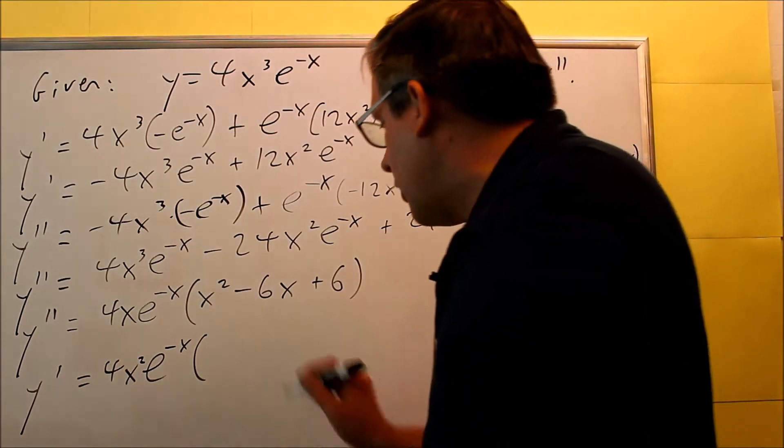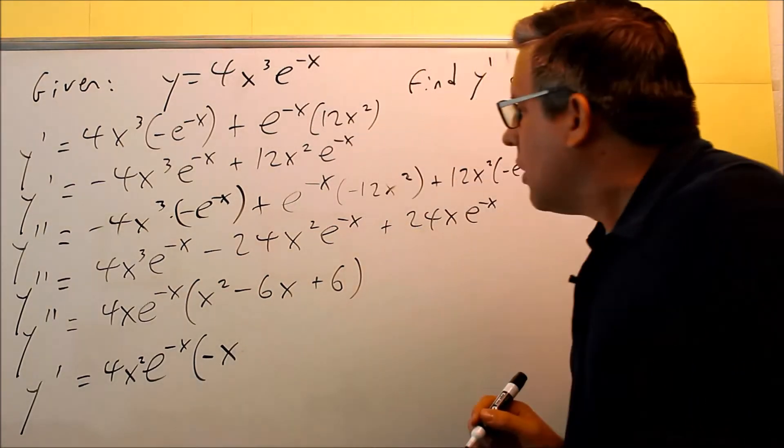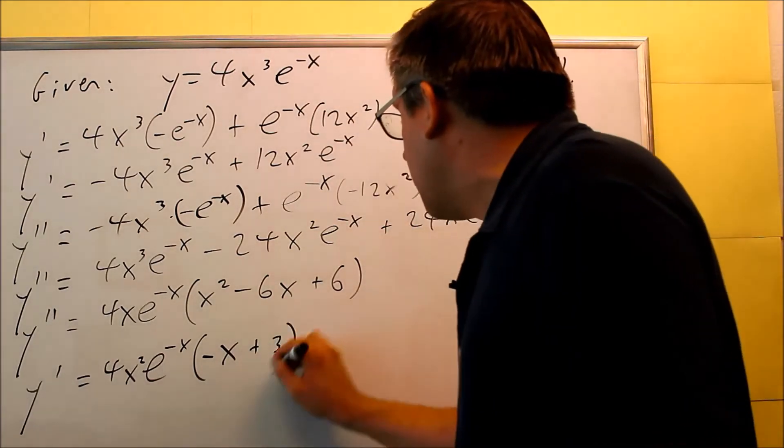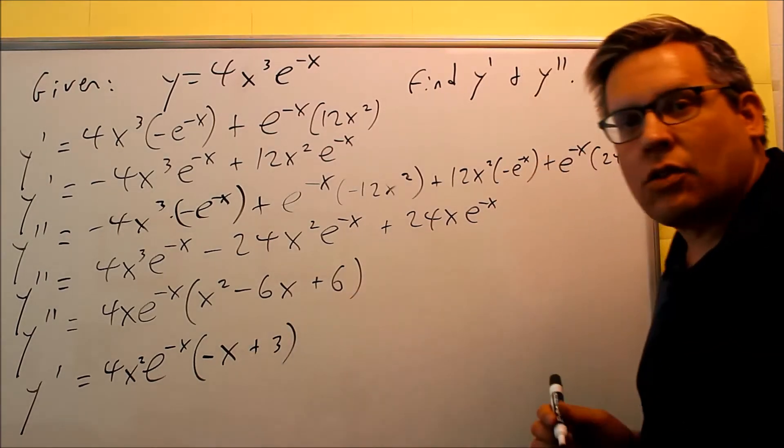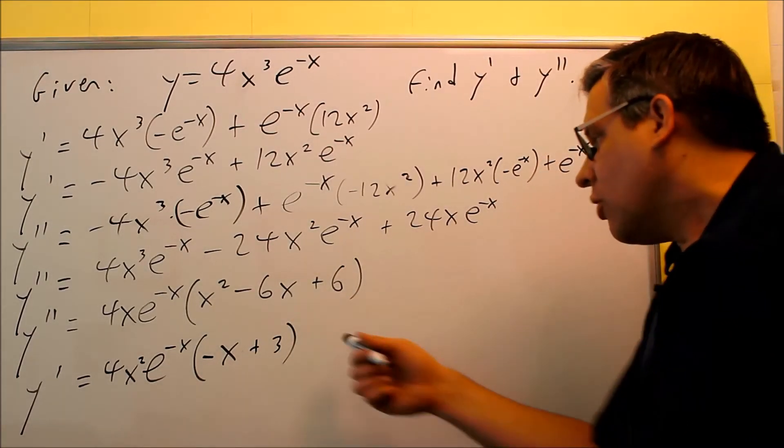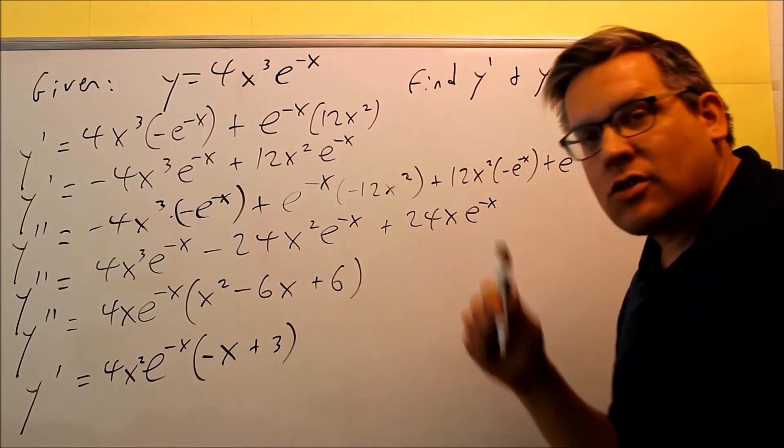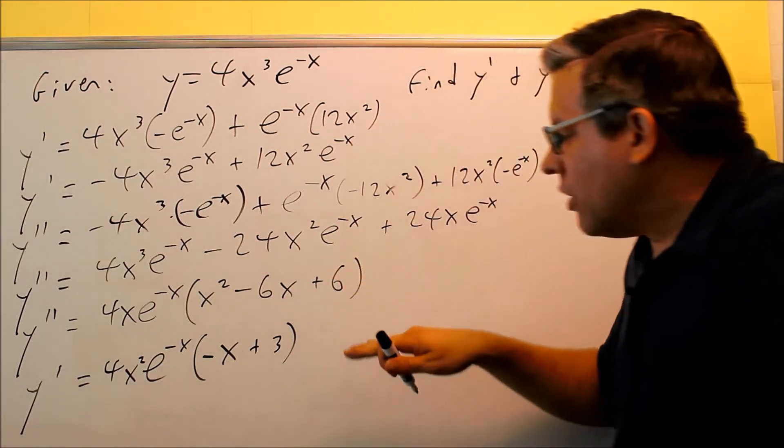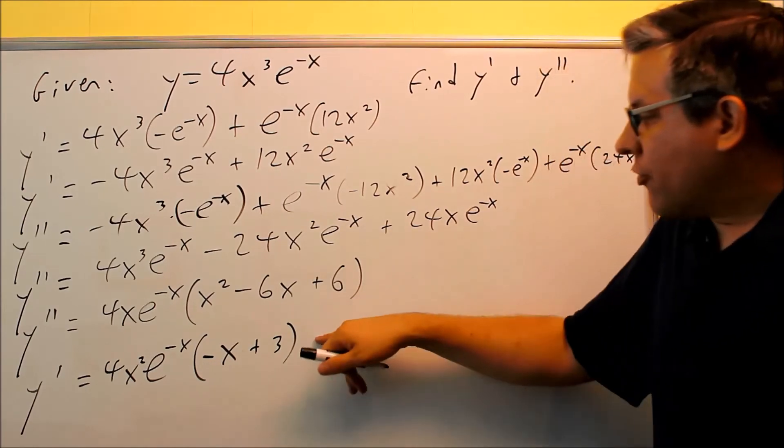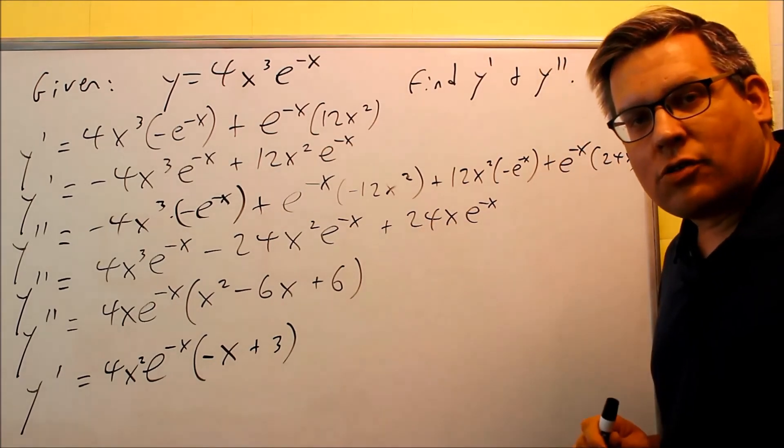Then that's going to leave us with a -x. And then, left over here will be a +3. So, you could leave it like that. Or you can switch the order and make it 3-x if you wanted to. Or factor out a negative and make it x-3. A couple different ways you could write your answer. But that would be the factored form. So, here's your first derivative. And there's your second derivative.